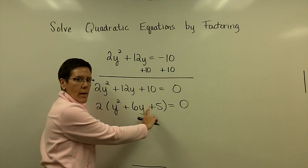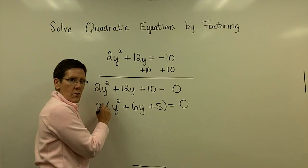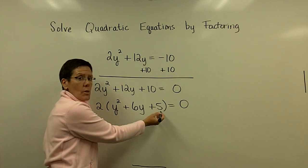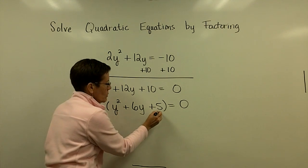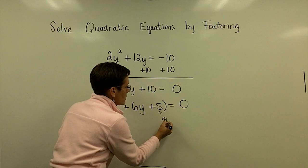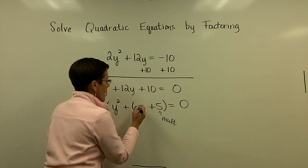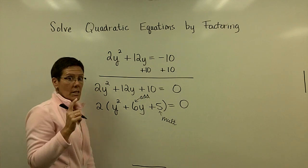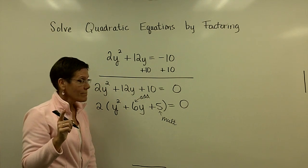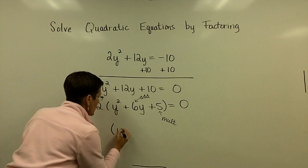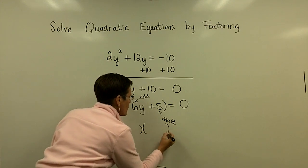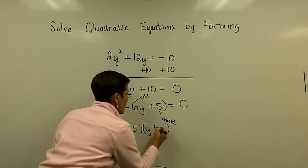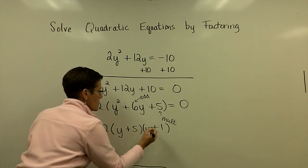I now have a trinomial that has a 1 in front of the squared term. That's an easier problem, because then I'm just looking for two numbers that multiply to be 5 and they need to add to be 6. So be careful. That's 5 and 1: multiply to be 5 and add to be 6. So I put a y in front of each of these, and then I just stick a plus 5 in one of them, a plus 1 in the other, and I bring that 2 down.